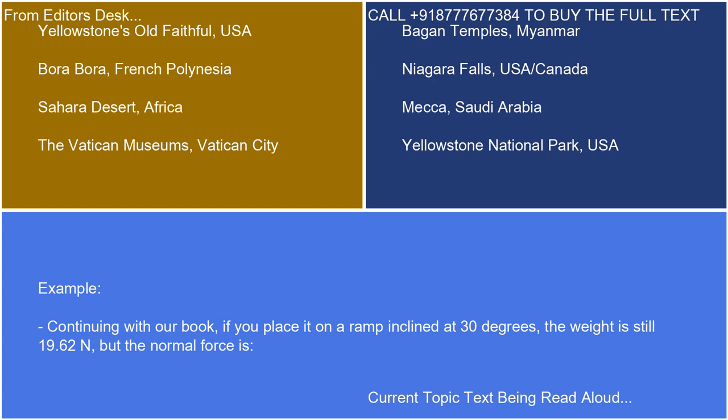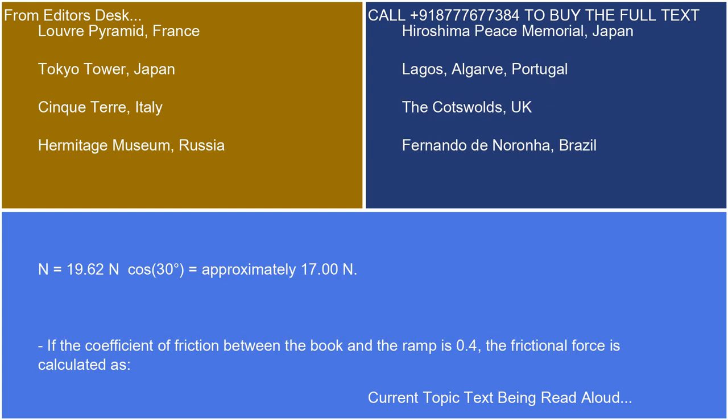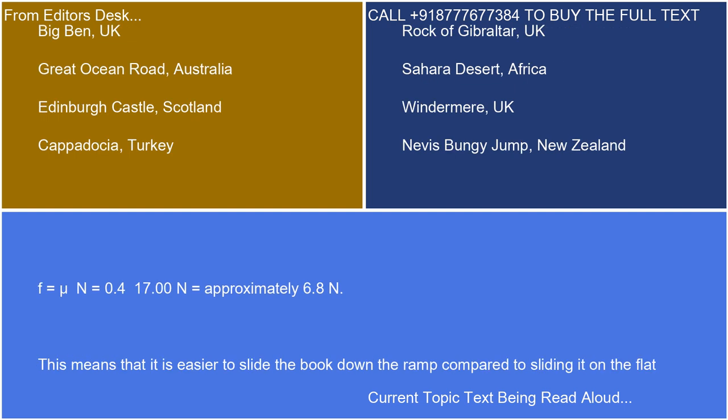For example, continuing with our book: if you place it on a ramp inclined at 30 degrees, the weight is still 19.62 N, but the normal force is N = 19.62 N × cos(30°) ≈ 17.00 N. If the coefficient of friction between the book and the ramp is 0.4, the frictional force is F = μN = 0.4 × 17.00 N ≈ 6.8 N. This means it is easier to slide the book down the ramp compared to sliding it on the flat table, because the normal force, and thus the friction, has decreased.